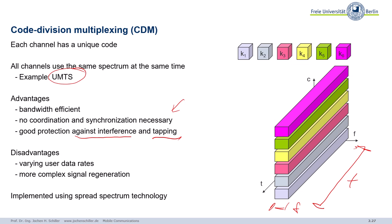There are some disadvantages: it's difficult to guarantee certain user data rates, because the achievable data rate depends on how many others are transmitting simultaneously. Going back to the party example: if too many people speak at once it gets louder and louder until you can't understand anything, no matter what language is used. Signal reconstruction is also more complex. I will come back to this when discussing UMTS third-generation mobile phone systems. There's also an important technology closely related to code division multiplexing: spread spectrum, which I'll cover in the next section.